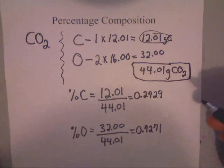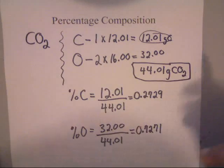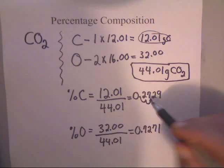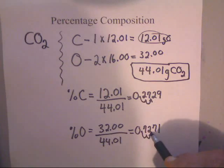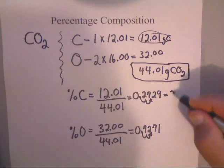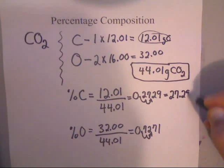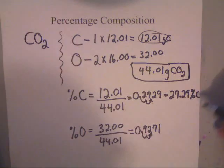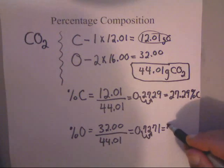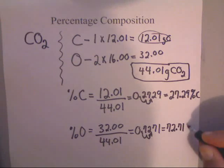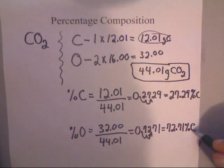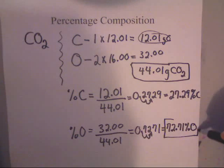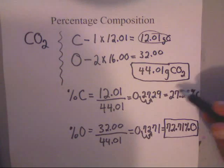Now you're almost done. All you've got to remember to do next is swing your decimal two places, one two places. Then you get 27.29 percent carbon. On this one you'll get 72.71 percent oxygen.